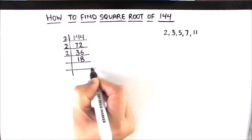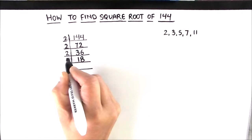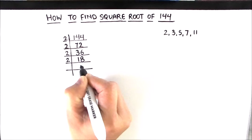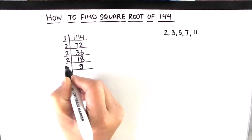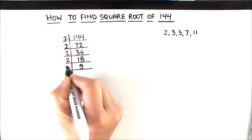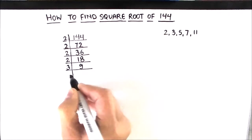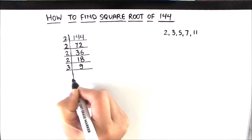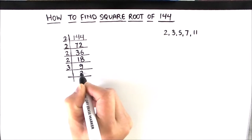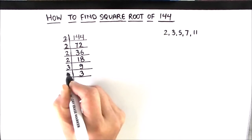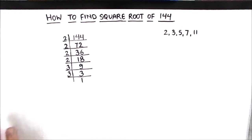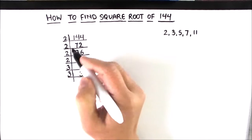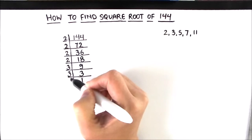2 times 9 is 18. And now 9 is an odd number, so we are going to use the second prime number which is 3. 3 times 3 is 9. And 3 times 1 is 3. So now we got all the factors of 144.